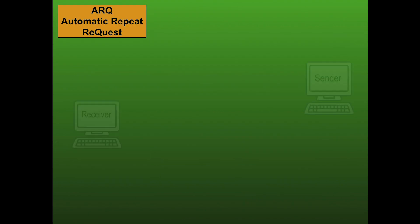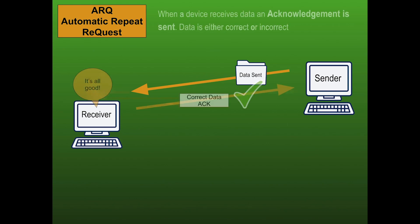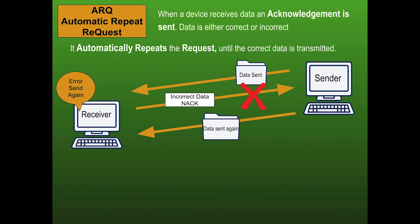The first method is the Automatic Repeat Request. The sender sends the data across to the receiver. When the receiver receives the file, they give an acknowledgement to say they got all the data correctly. If the data is incorrect, they send a message to say it's wrong and request it be sent again. This process is repeated until the correct data is transmitted.